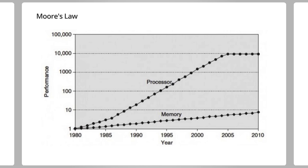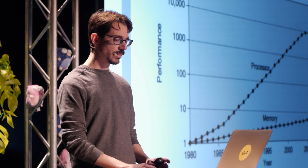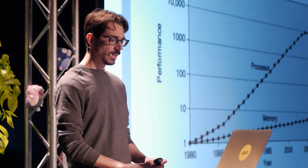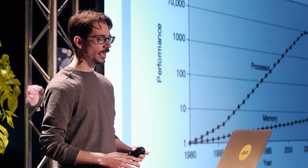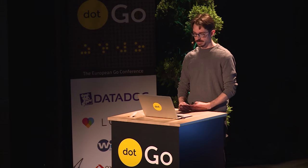Moore's Law says that the number of transistors on a processor doubles every 18 months. You can see on this graph where single-core performance plateaued, and so now manufacturers are scaling things by adding multiple cores — and this, of course, is why languages like Go are interesting. The bottom line on the graph is the rate at which RAM speed is increasing — much, much slower.